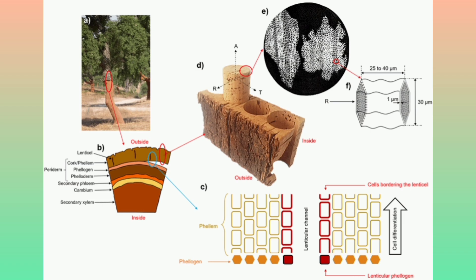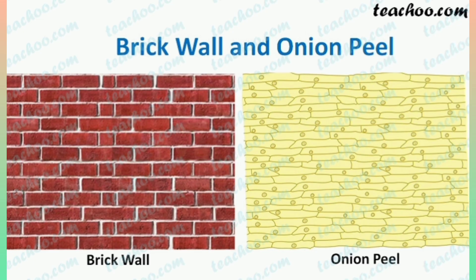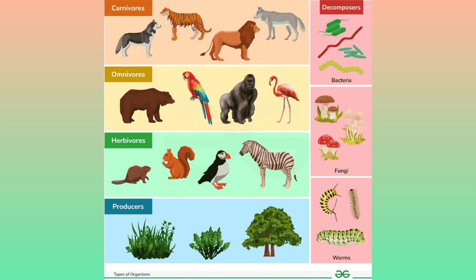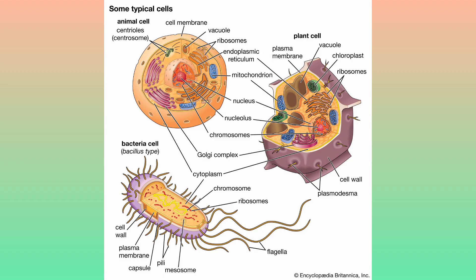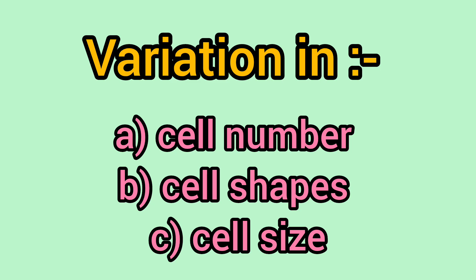Cells are similar to bricks. The buildings, though built of similar bricks, have different designs, shapes and sizes. Similarly, in the living world, organisms differ from one another, but all are made up of cells. Cells in living organisms are complex, living structures, unlike non-living bricks.